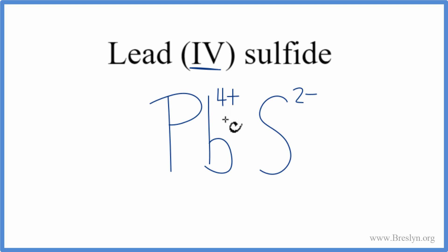So these need to add up to zero for us to have the correct formula for lead-4-sulfide. We can see that the lead, that's a plus-4, and the sulfur is at two minus. So we need to double this to give us a minus-4, which would cancel this out and give us a net charge of zero.